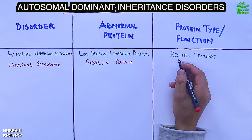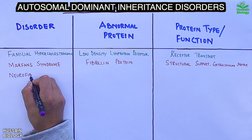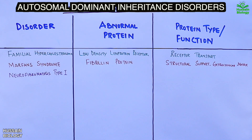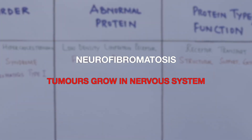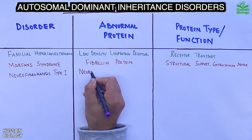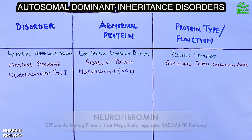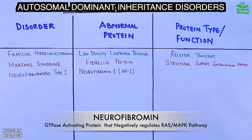Third is neurofibromatosis, where tumors grow in the nervous system. This is due to mutation of the NF1 gene, leading to production of abnormal neurofibromin protein. Under normal conditions, the NF1 protein acts as a GTPase-activating protein that negatively regulates the RAS/MAPK pathway.